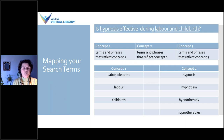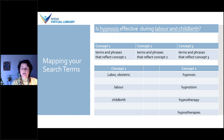Once you've determined your question and written it hopefully in PICO format, the next step is to map out your search terms. For a simple question like 'Is hypnosis effective during labour and childbirth?', you underline the concepts you're looking for and then put them into a map — usually a chart of three columns. You generally don't want more than three concepts, as that can make the search too narrow. One to two to three concepts is good.